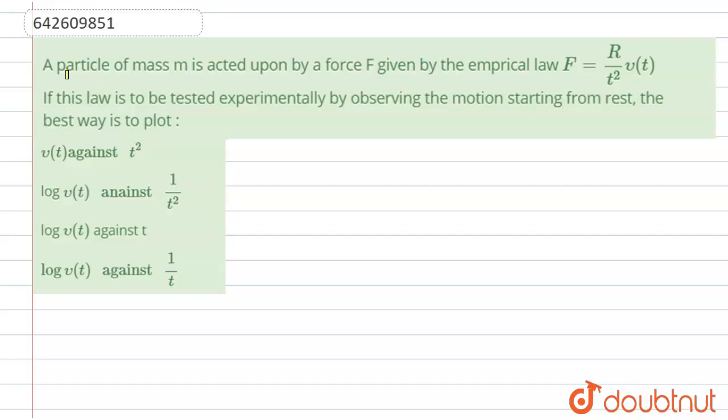Hello everyone. The question says that a particle of mass M is acted upon by a force F given by the empirical law F equals R upon T square V of T. If this law is to be tested experimentally by observing the motion starting from rest, the best way is to plot.